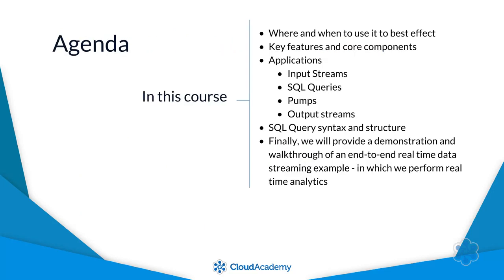The agenda and learning objectives for this course are as follows. We'll review Kinesis Analytics and where and when to use it to best effect. We'll introduce you to the key features and core components of the Kinesis Analytics service. We'll spend some time understanding and reviewing AWS Kinesis Analytics applications, input streams, queries, pumps, and output streams. We'll review the important parts of how to define and structure our SQL queries. Finally, we'll provide a demonstration and walkthrough of an end-to-end real-time data streaming example, in which we perform real-time analytics.